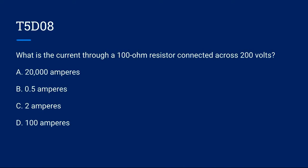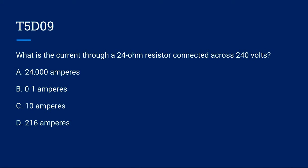T5D08: What is the current through a 100 ohm resistor connected across 200 volts? A. 20,000 amperes, B. 0.5 amperes, C. 2 amperes, or D. 100 amperes. Correct answer is C. 2 amperes. T5D09: What is the current through a 24 ohm resistor connected across 240 volts? A. 24,000 amperes, B. 0.1 amperes, C. 10 amperes, or D. 216 amperes. Correct answer is C. 10 amperes.